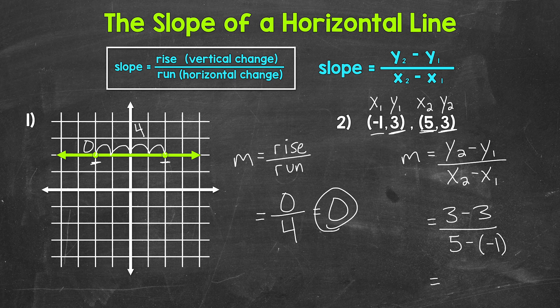And now we subtract. 3 minus 3 is 0. And then we have 5 minus negative 1. Now whenever we have a subtraction problem involving integers and we have positives and negatives, it can be helpful to add the opposite. And this is one of those problems. So let's add the opposite. The opposite of negative 1 is positive 1.